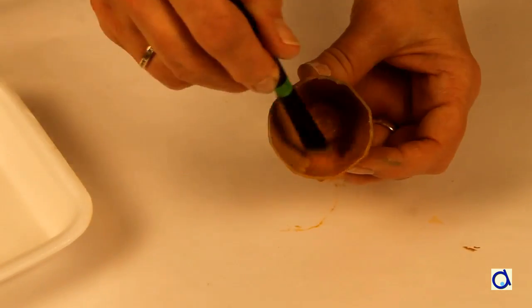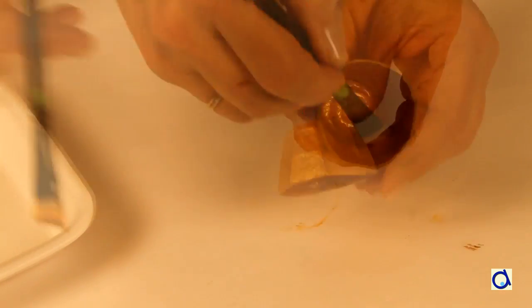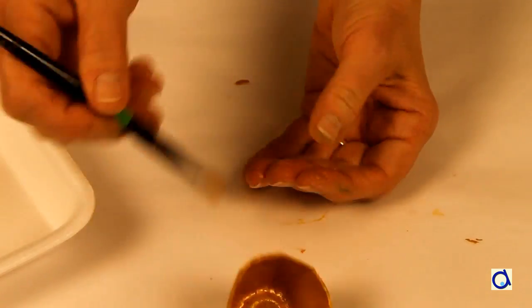When the ochre base coat is dry, paint the inside and outside of the cell with gold paint.